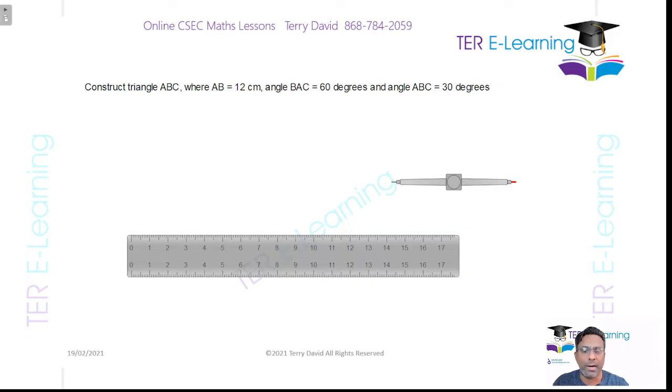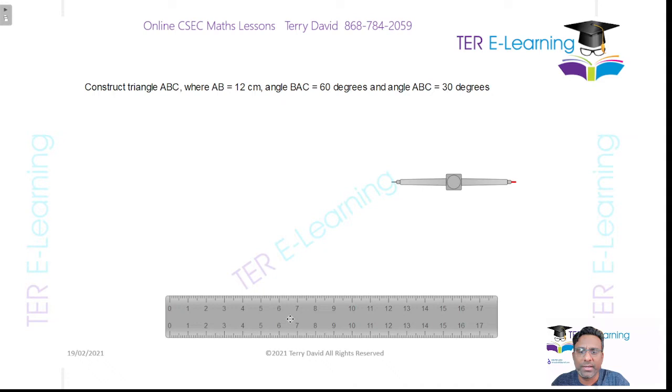In this particular question here I have one side and two angles. AB is 12 cm. So what we do in a question like this, first thing is to draw a line that is longer than 12 cm. It doesn't matter once it's longer than 12 cm.